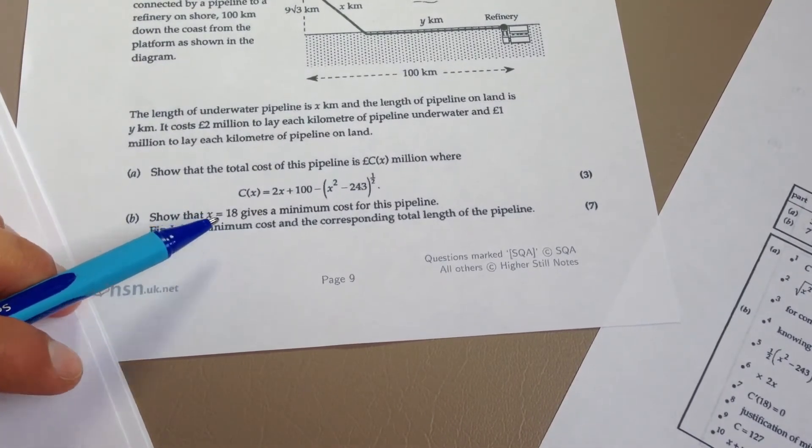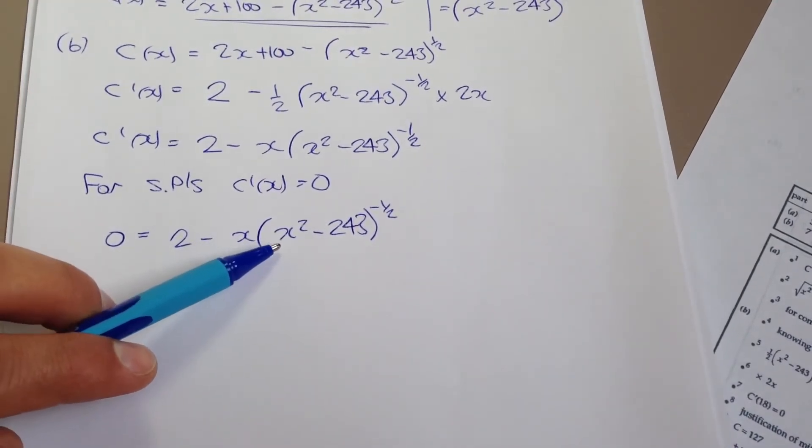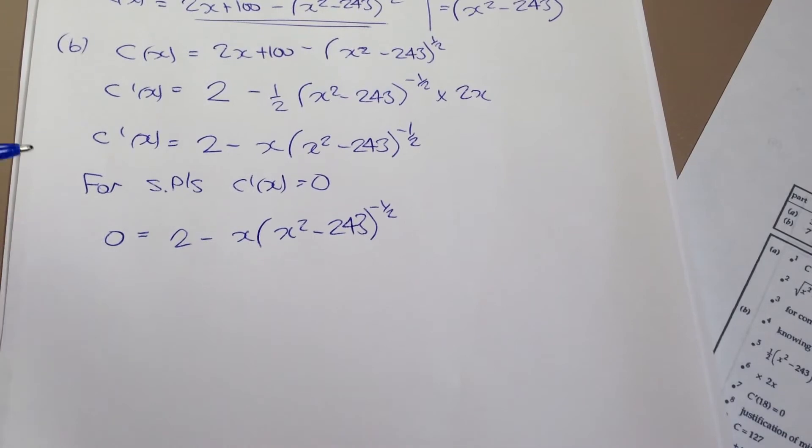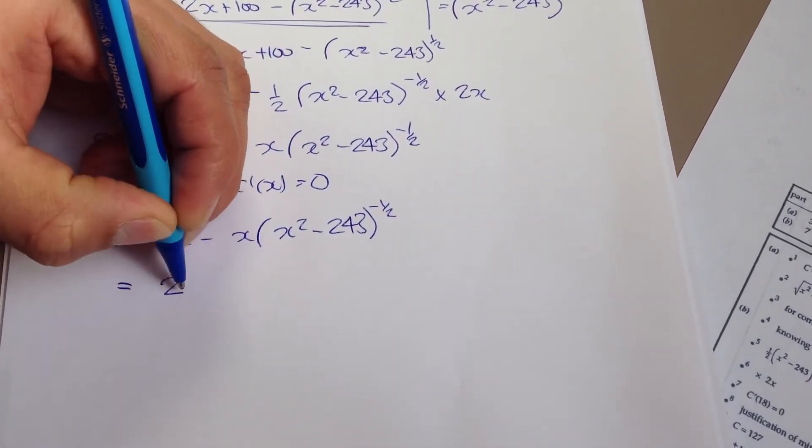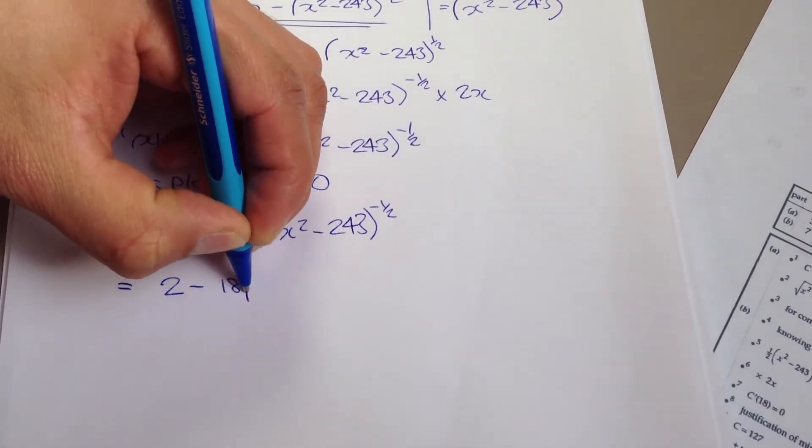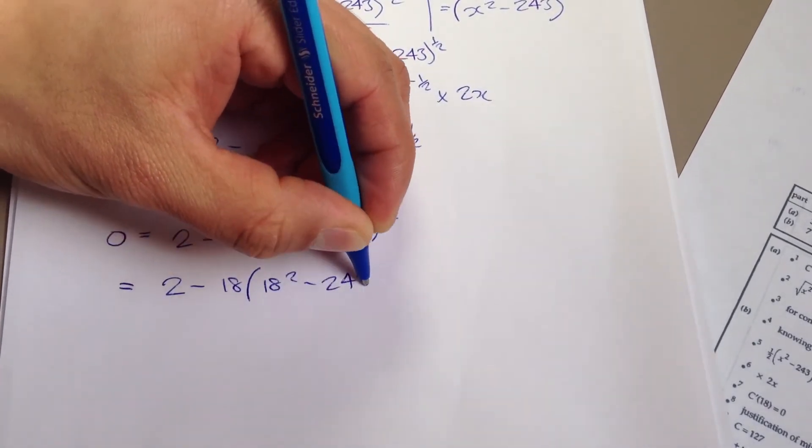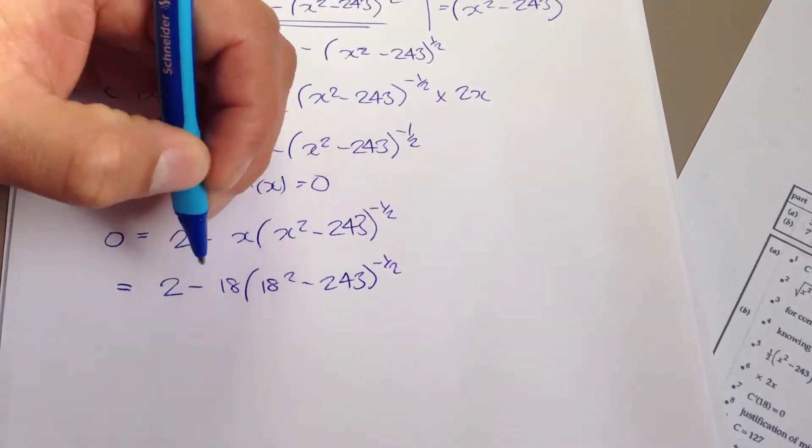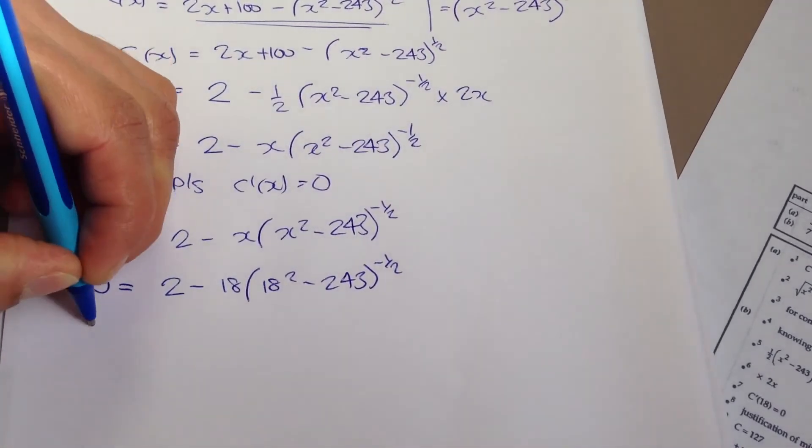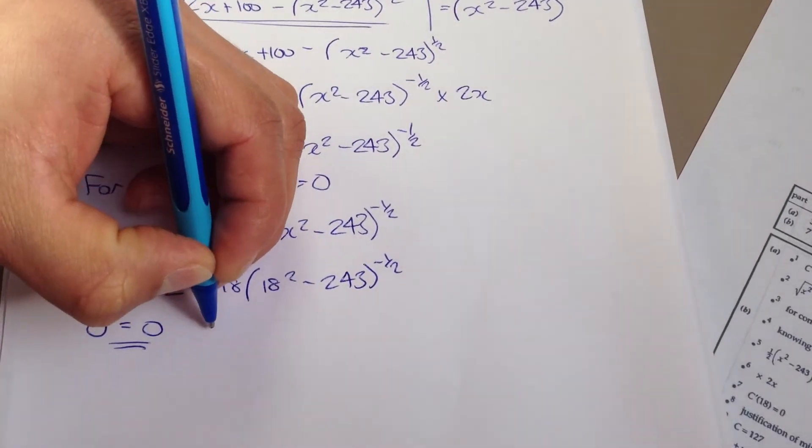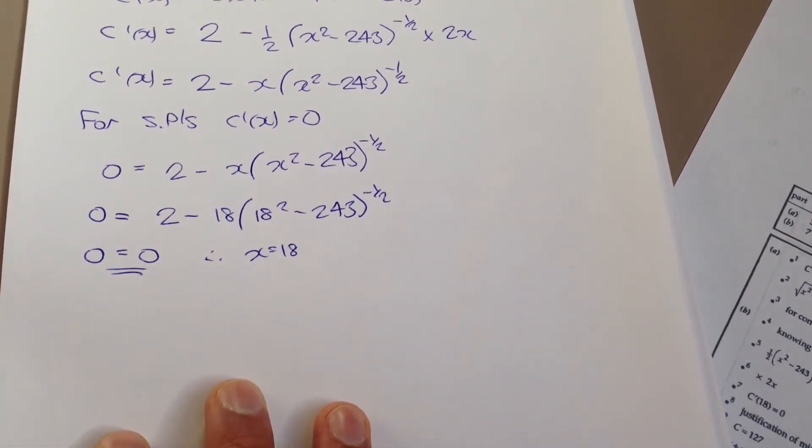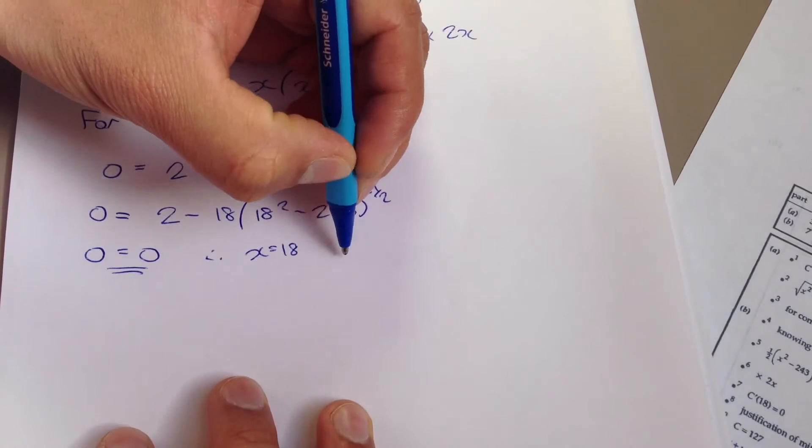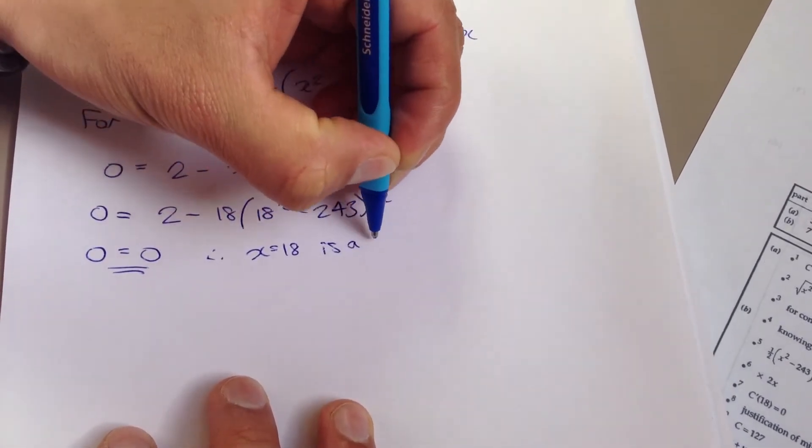How about we use x equals 18, plug that in here and here, and if we get 0, great! The left hand side equals the right hand side. This is in fact a stationary point. So it's a little bit of a different way to approach it. And that's what I'm going to do here. So I'm going to do 2 minus 18 bracket 18 squared minus 243 to the negative a half. And if you plug that into a calculator, you will in fact see that it does equal 0. Therefore, x equals 18 is a stationary point. Now we cannot actually go ahead and say that it's a minimum turning point because we haven't proven it yet. But we can say x equals 18 is a stationary point.